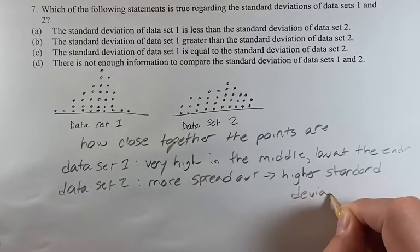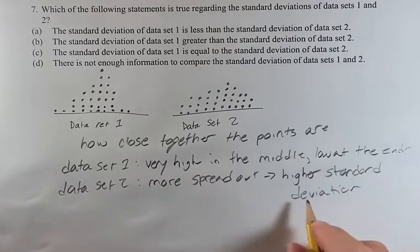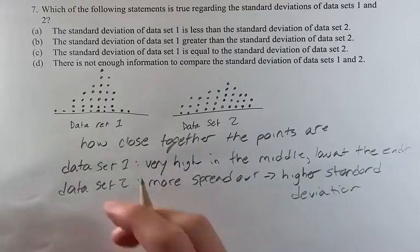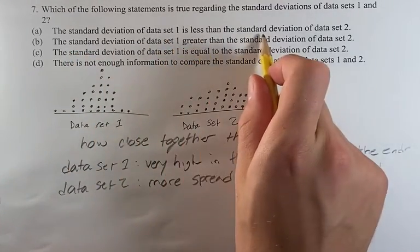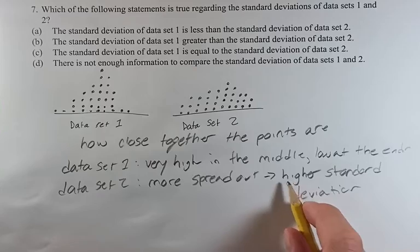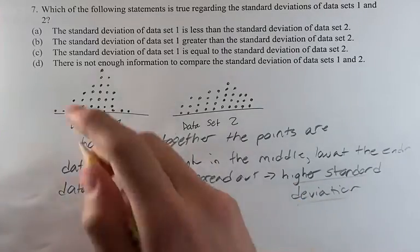Now we have to look at which of these answers correlates with that. Dataset 2 having a higher standard deviation. Standard deviation of set 1 is less than the standard deviation of set 2. That's basically what we said, just in reverse, so that's going to be our answer.